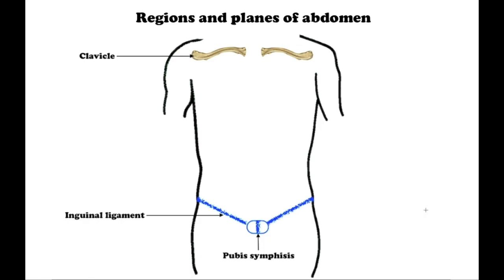Hi everyone, it's Schematic Med and today we are going to talk about abdominopelvic regions. Many of the organs in the abdominal cavity can be palpated through the abdominal wall or their position can be visualized by surface marking. Nine regions of the abdomen are useful clinically for describing the location of pain and for describing surgical procedures.